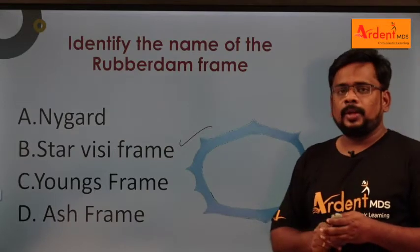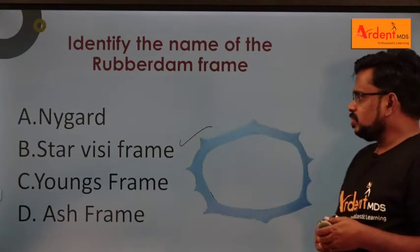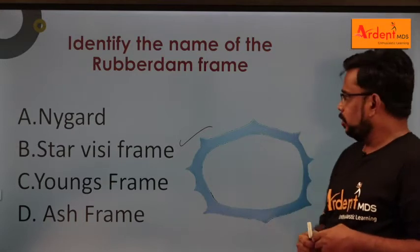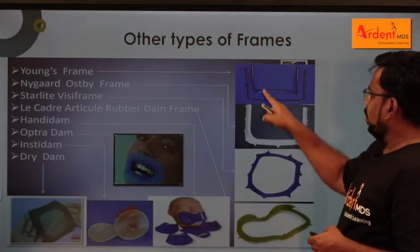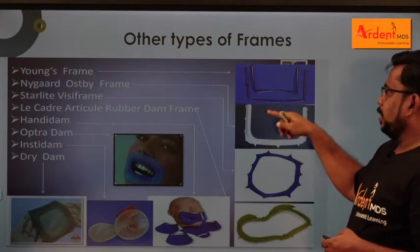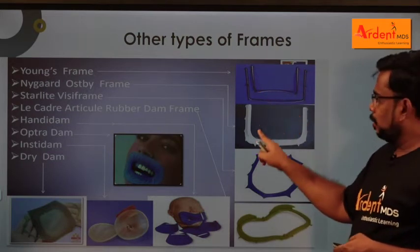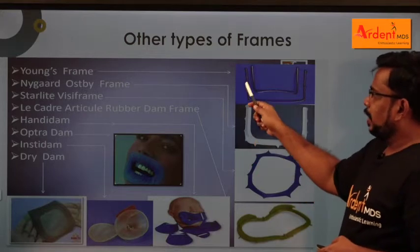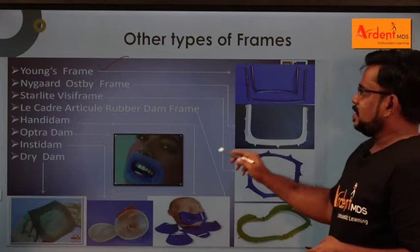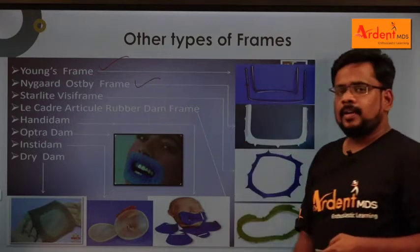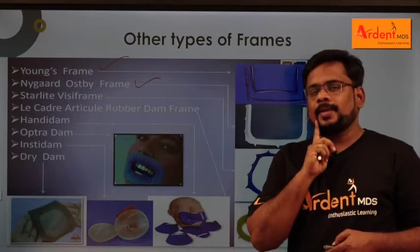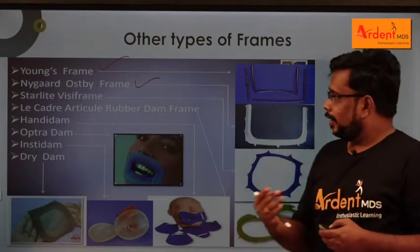The frame is used to hold the rubber dam sheet. We have a U-type frame made of either metal or plastic. If it is metal, it is an Ivory frame. If it is plastic, it is an Ivory aspirate - or you may have heard about Nygaard-Ostby frame. ETTA is given by the Nygaard-Ostby frame.